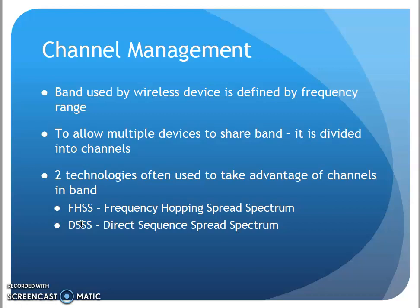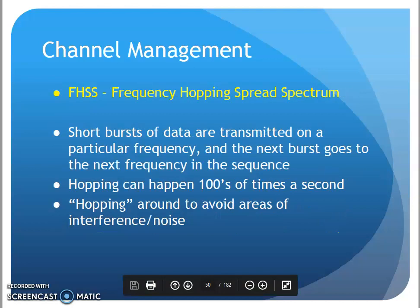Variations of these technologies are typically used. With frequency hopping spread spectrum, a short burst of data is transmitted on a specific frequency in that band, then it hops to another frequency and sends another burst, hops to a new frequency, and sends another burst.